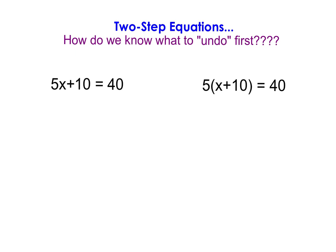Most students are able to look at the two problems on the screen and see that there's an addition of 10 — you can see that plus sign. And there's a multiplication taking place when the two items are combined. Most students know that there's a multiplication and an addition that need to be undone. The tricky part is that they don't know what to undo first.